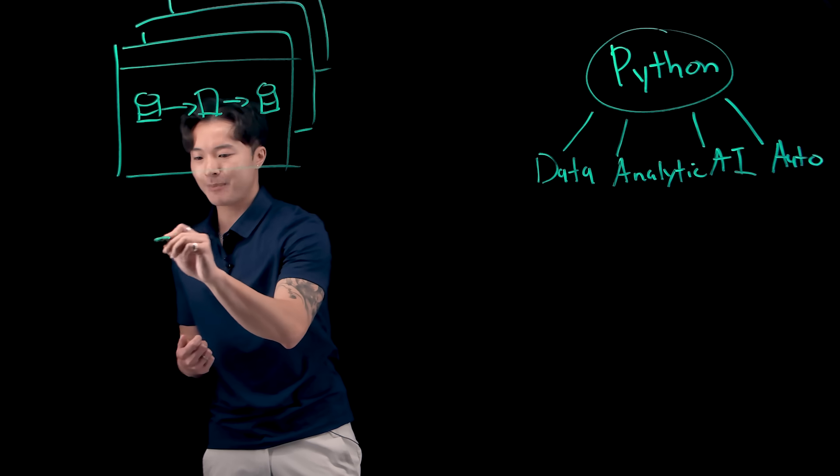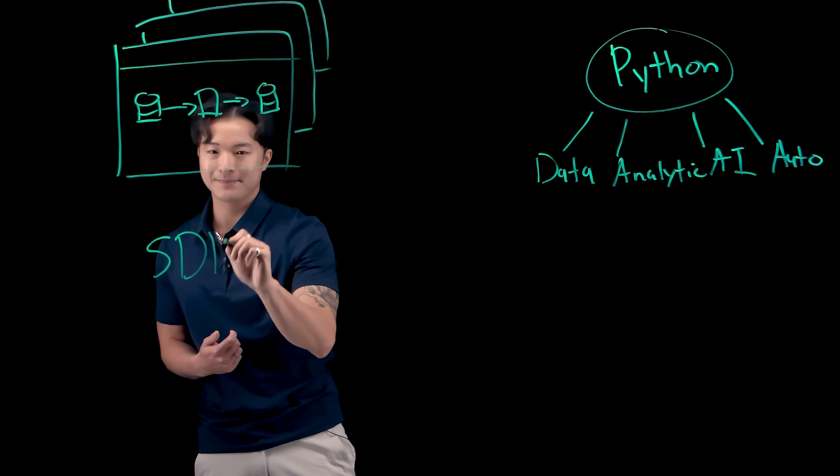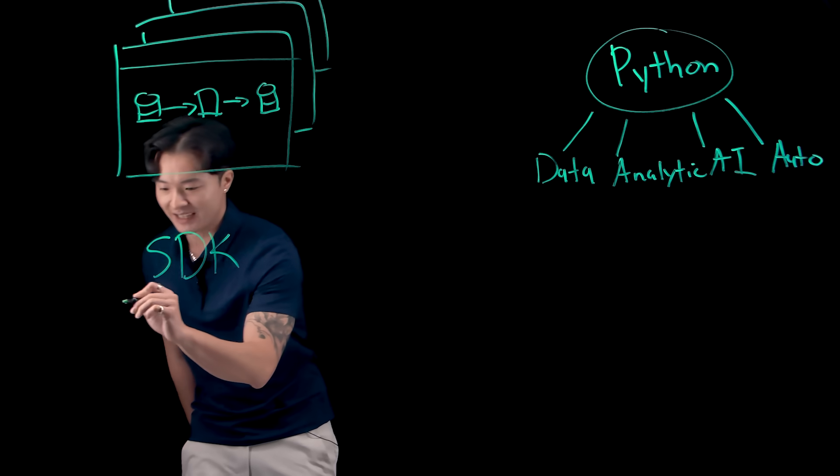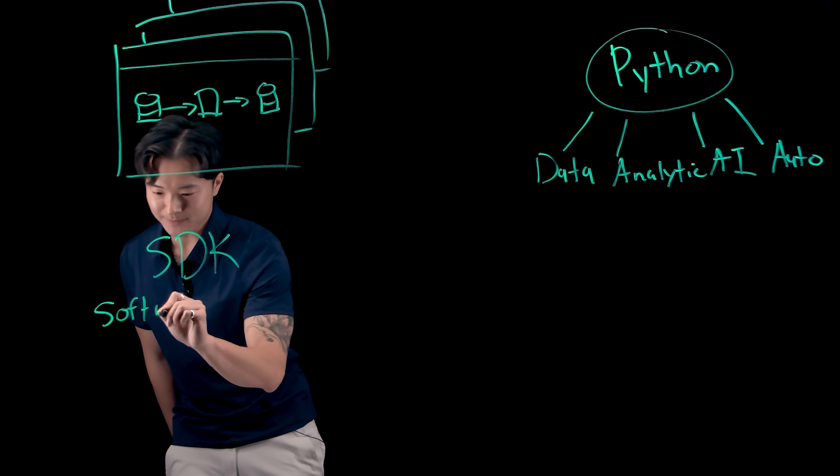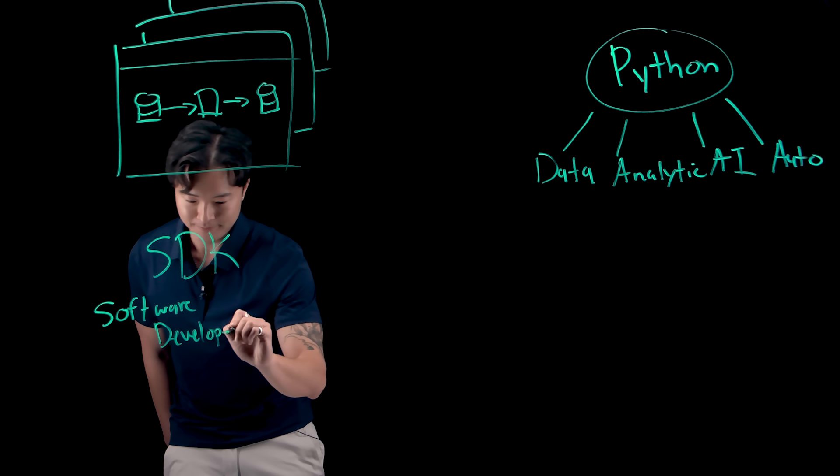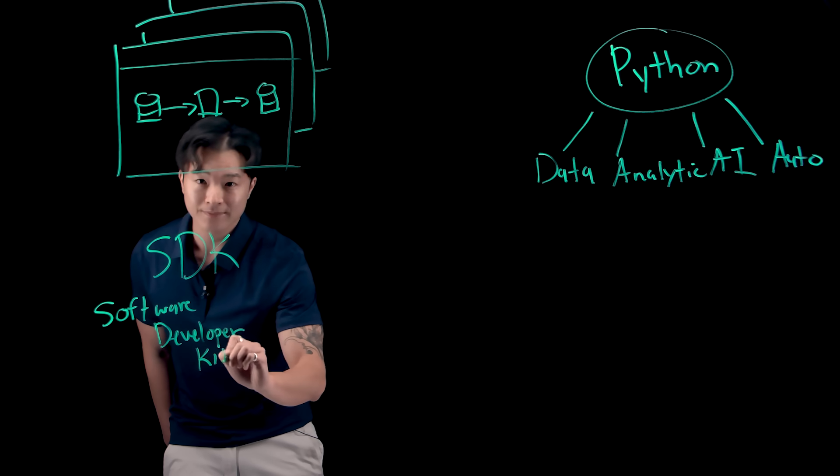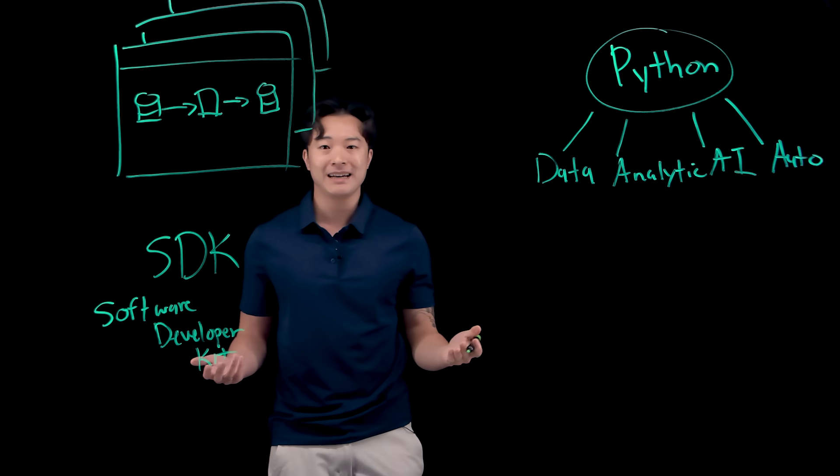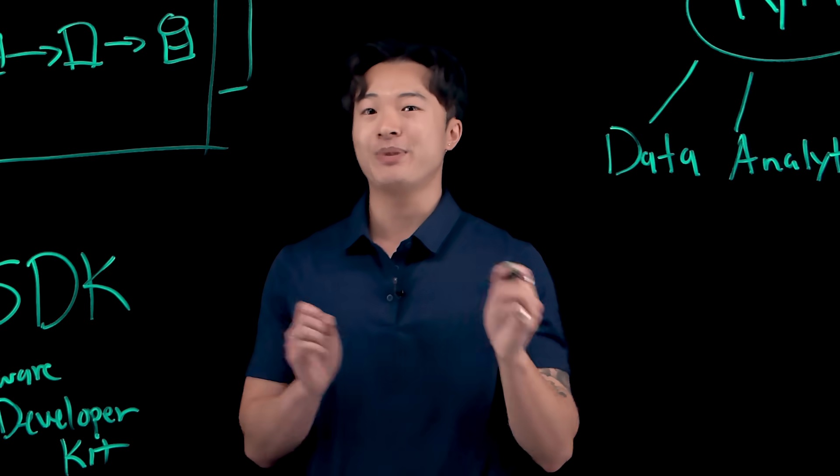That's where the Python SDK comes in. A Python SDK is a software developer kit that lets you design, build, and manage data pipelines as code. By leveraging Python's flexibility,